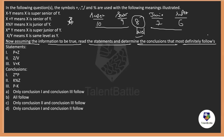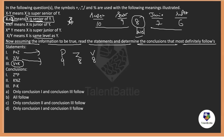From the statements: P + Z means P is senior of Z — if Z = 8, P = 9. Z ÷ V means Z and V are the same level — so V = 8 also. V + K means V is senior of K — if V = 8, then K = 7. So P = 9, Z = 8, V = 8, K = 7.